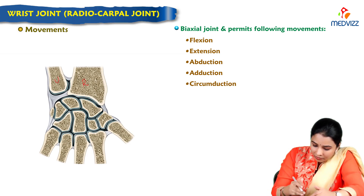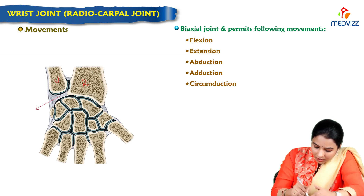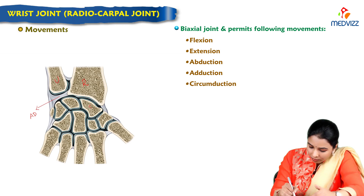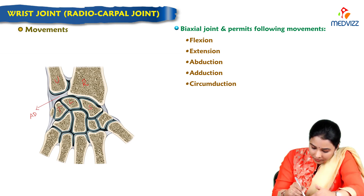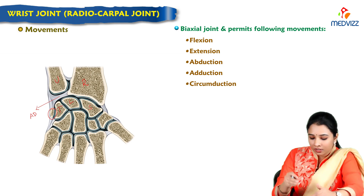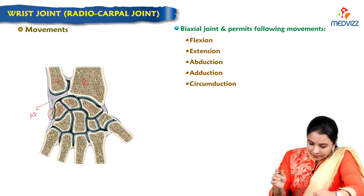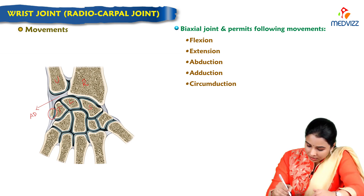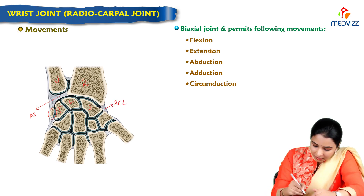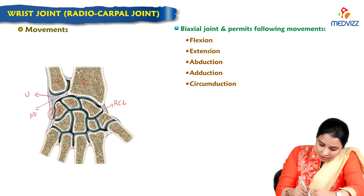The lower end of the ulna does not participate in the wrist joint. There is the articular disc, and the carpal bones: scaphoid, lunate, and triquetral. The pisiform is not related to the wrist joint. The radial collateral ligament and ulnar collateral ligament are visible on their respective sides.